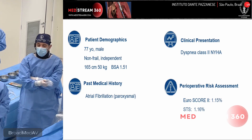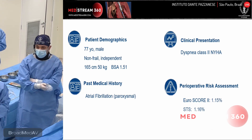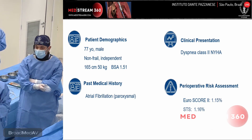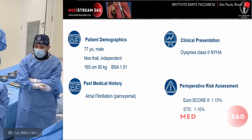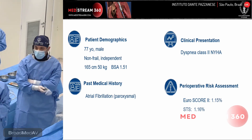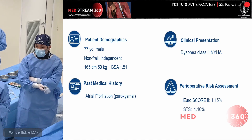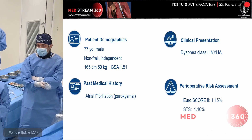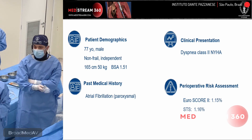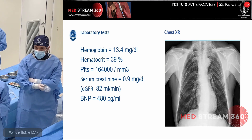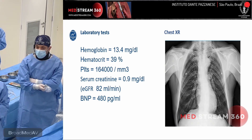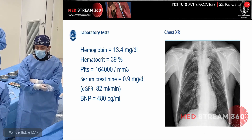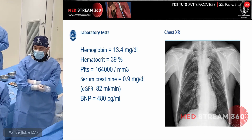This is a 77-year-old gentleman, non-frail, independent. He has atrial fibrillation and presented in our hospital with symptoms of heart failure due to aortic stenosis. Surgical risk assessment: the EuroScore 2 is 1.1 and the STS score was estimated as 1.2. Here you can see the lab tests — unremarkable. The renal function is normal with a GFR of 82.